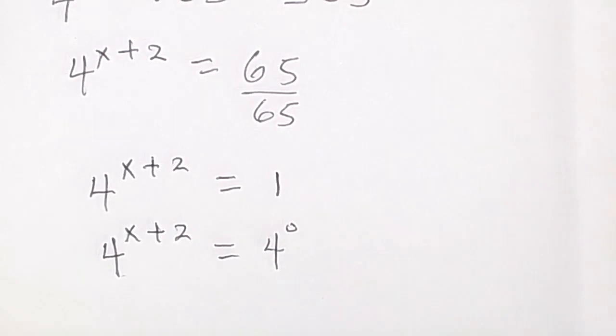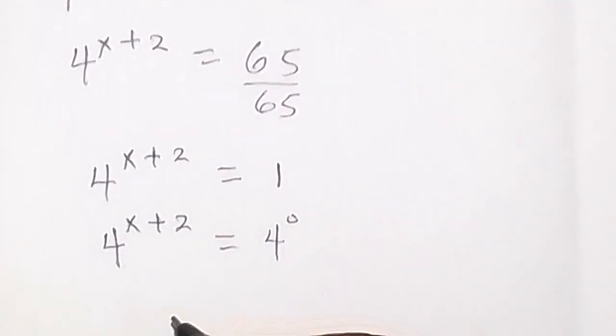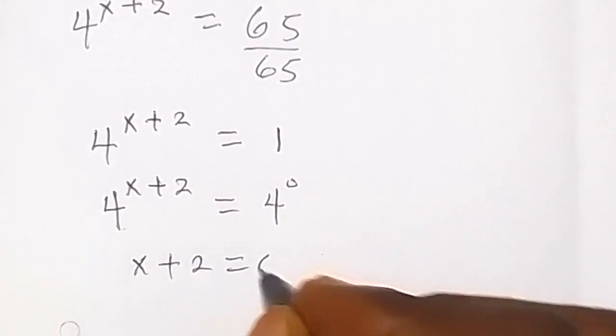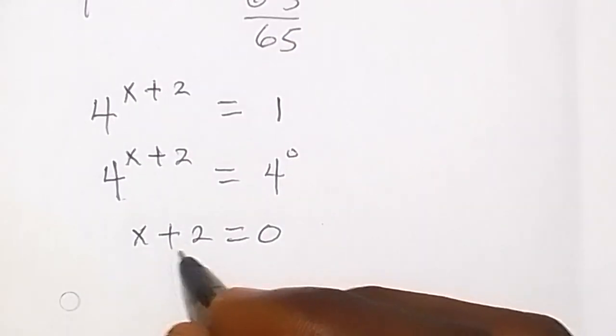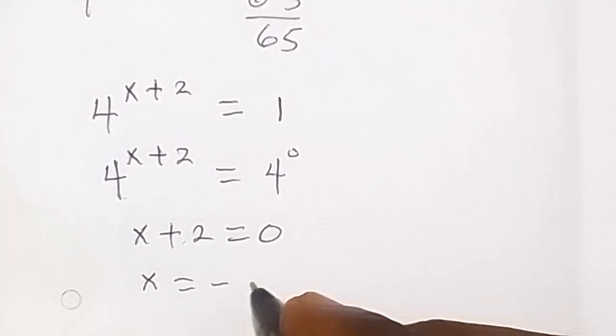And from there, the bases are the same in this equation, so we can equate the powers. This will be x plus 2 equals to 0. And then when we solve for x, we take plus 2 to the other side, which becomes minus 2. Therefore, x equals to minus 2.